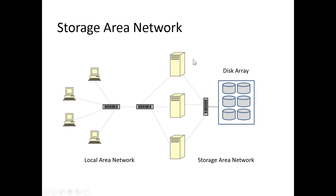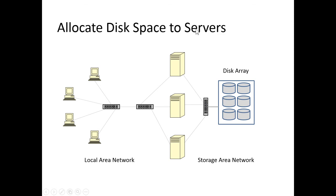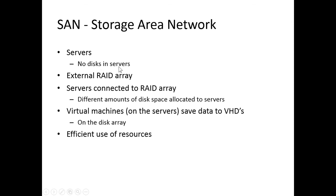The solution is a storage area network: you get an external disk array — often called a RAID array — and connect it to the servers with a switch. The disks are stored in the disk array, not in the servers. In a storage area network, the disk array connects to the servers by way of a switch, and we allocate disk space as needed — for example, three terabytes to the first server, one terabyte to the second, half a terabyte to the third, or three and a half terabytes to the first. The virtual machines on the servers save data to virtual hard disks which are on the disk array, resulting in more efficient utilization of resources.